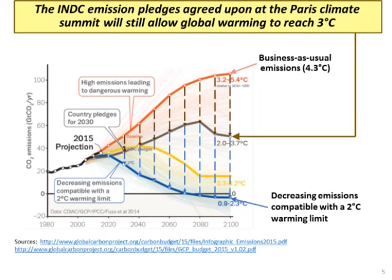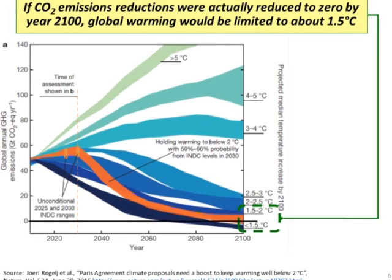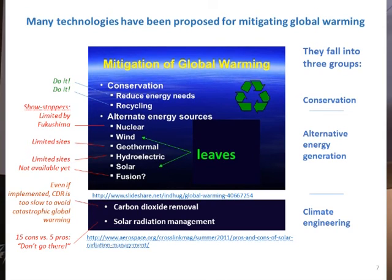The bad news is that if all the world does is hold to the INDC emission pledges - and just achieving that is going to be hard enough - global warming will reach three degrees C roughly, which would not be a good thing. More precisely, if we achieved a 100 percent reduction in CO2 emissions, global warming would reach about 1.5°C, which would be pretty good.